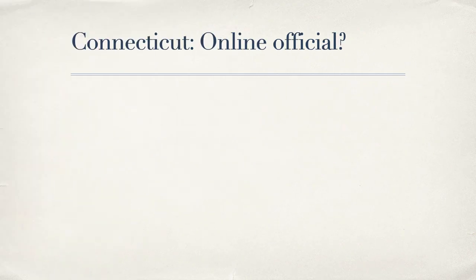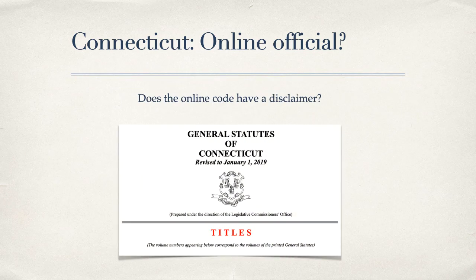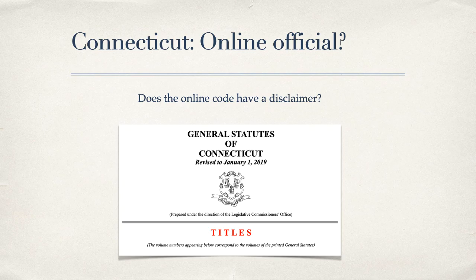Let's take a look at another state. What about Connecticut? So, the only way to know whether a state statute online is official or an exact or authentic copy is to search for it on the web and look for a disclaimer. When I pulled up the Connecticut code, we can find that there's actually no such disclaimer. This means that you can cite to this online source as though it's the print source of the Connecticut code, with no web address needed for your citation. You would use the date indicated on the source for your date parenthetical.